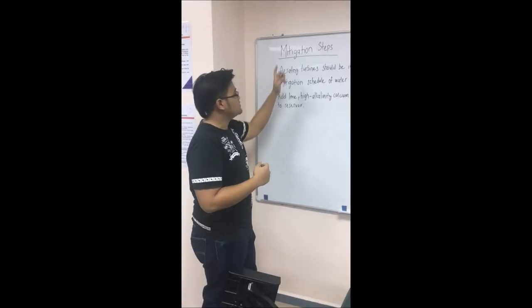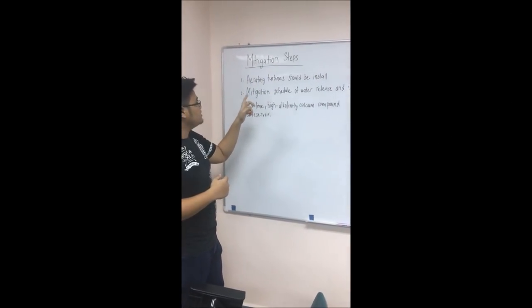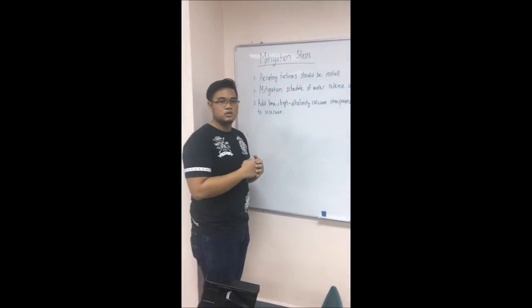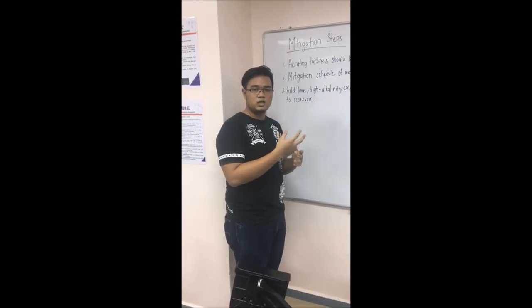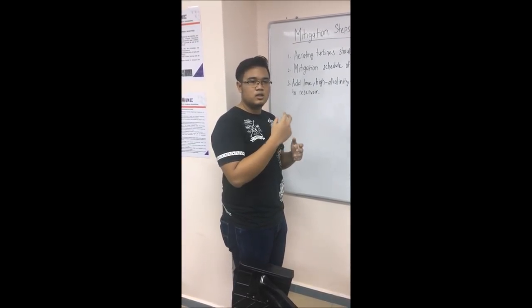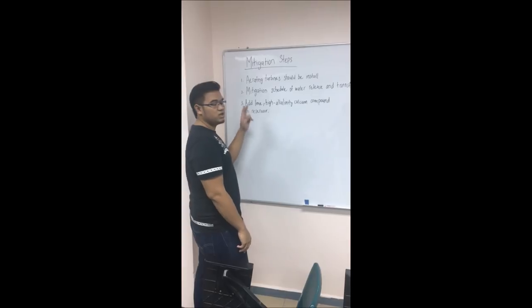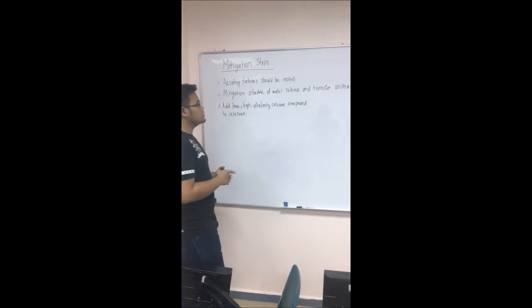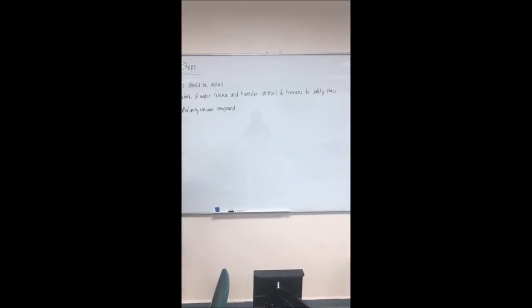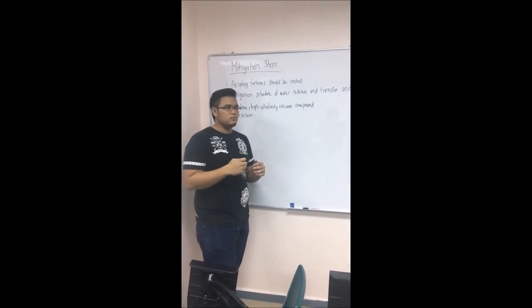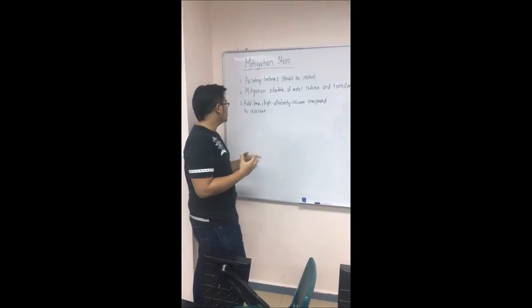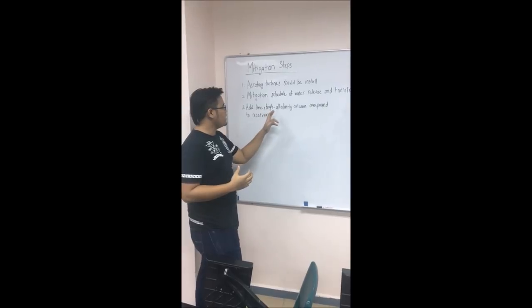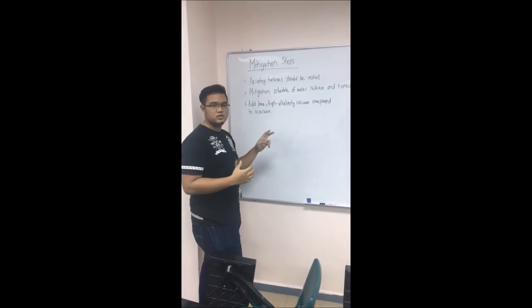The mitigation steps: First, an irrigation turbine should be installed at the dam so that the dissolved oxygen in the water can be increased, allowing animals and plants to survive in the water. Second, a mitigation schedule for water release and transferring animals and humans away from the flood-prone areas around the dam. Lastly, to reduce acidity in the water, we need to add lime and high-alkalinity calcium components to the reservoir.